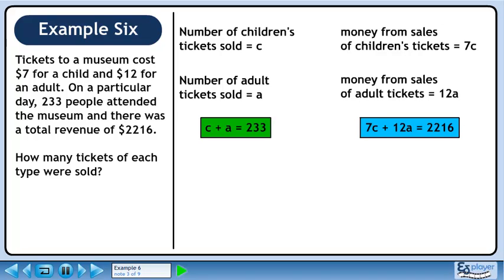The amount of money collected from children's tickets is 7C and the amount of money collected from adult tickets is 12A. If the total revenue is $2,216, we can write the equation 7C plus 12A equals 2,216.